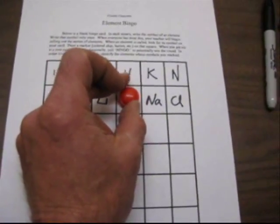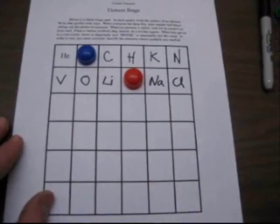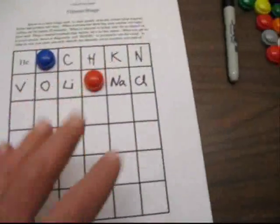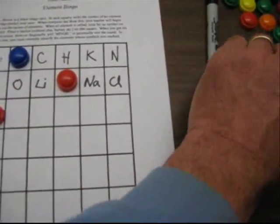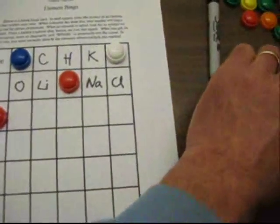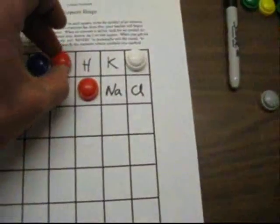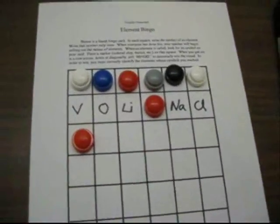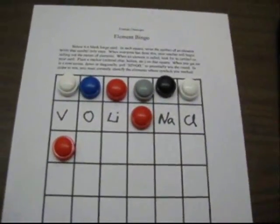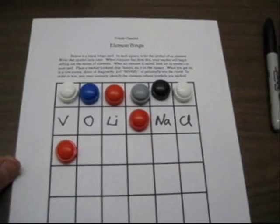So I'll mark the Al for aluminum. And then play continues, and the students will continue to mark the various elements they have. And then once a student has six in a row, either across or down, or then diagonally, six in a row, they've got to have a bingo. And you can tell them to yell out bingo.